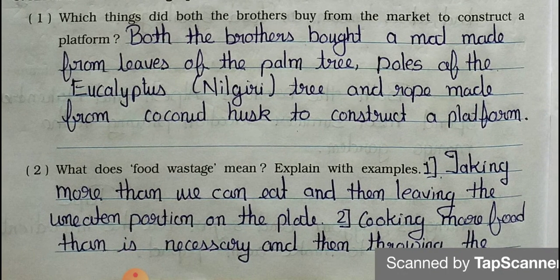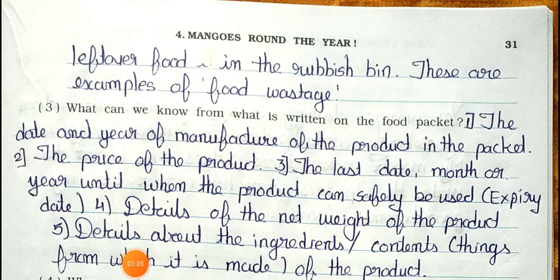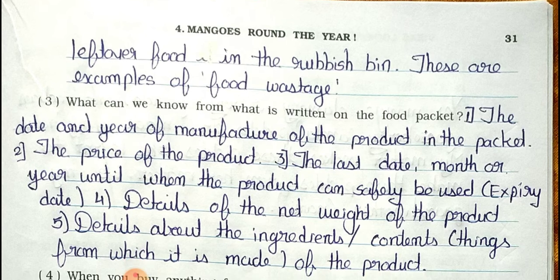Question 2: What does food wastage mean? Explain with an example. Point 1: Taking more than we can eat and then leaving the uneaten portion on the plate. Point 2: Cooking more food than is necessary and throwing the leftover food in the rubbish bin. These are examples of food wastage.